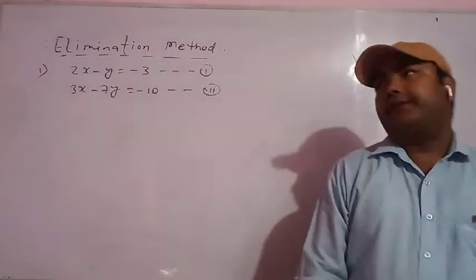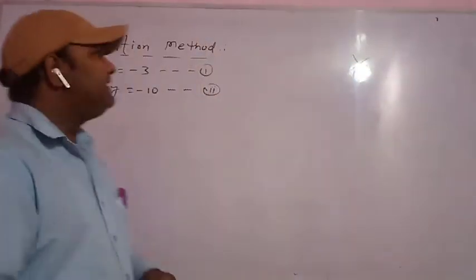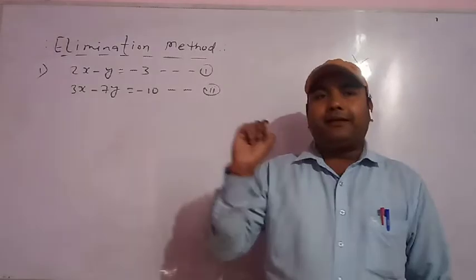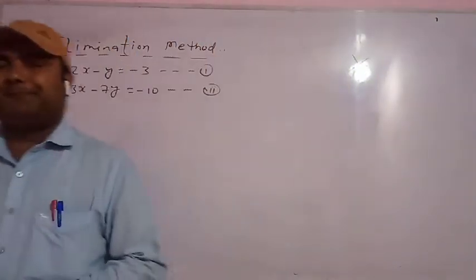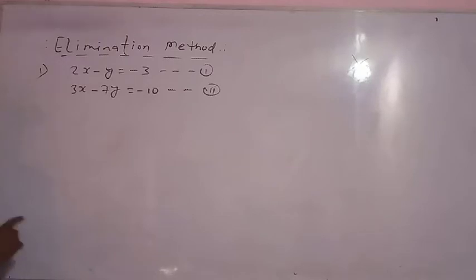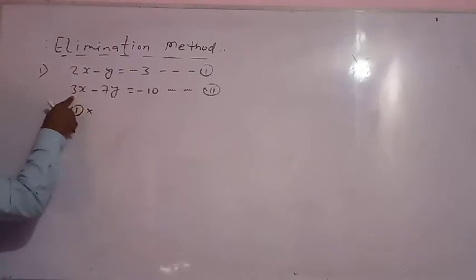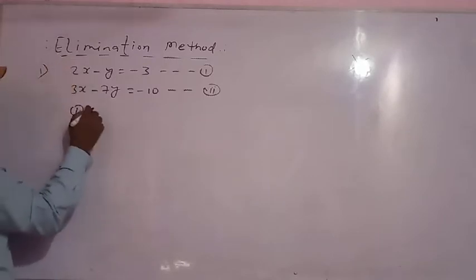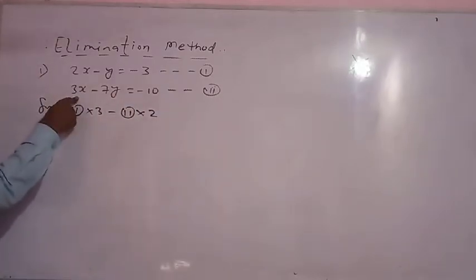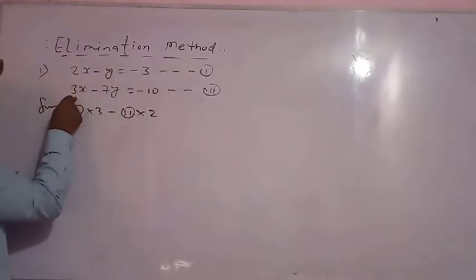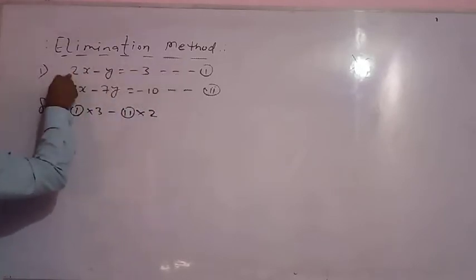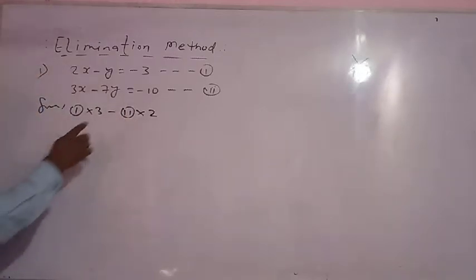Now see the second method to find the value of x — the elimination method. Eliminate means we have to eliminate either x or y. In this question, x has coefficient 2 in the first equation and 3 in the second. So we use the second coefficient for equation 1 and the first coefficient for equation 2. We will multiply 3 by the first equation and 2 by the second equation, then subtract.